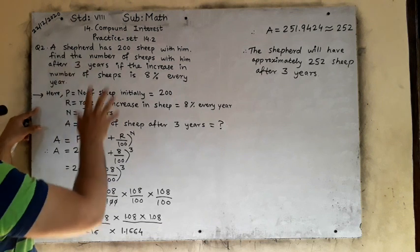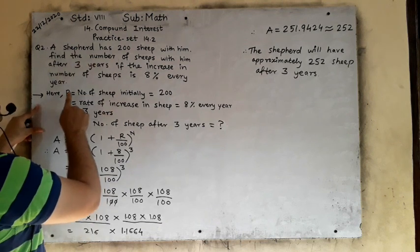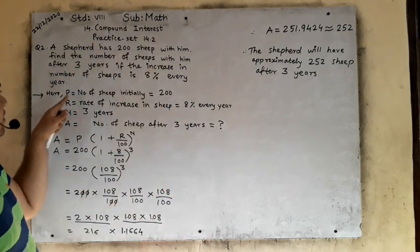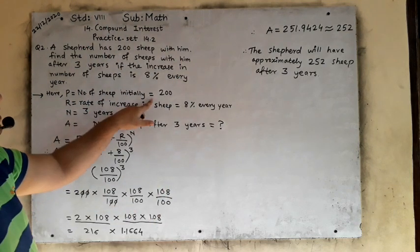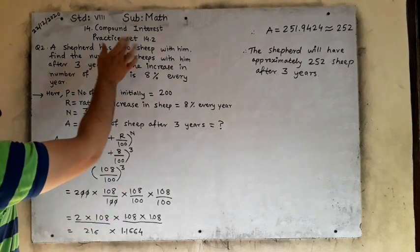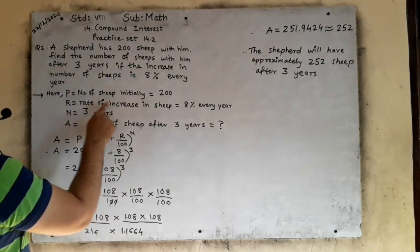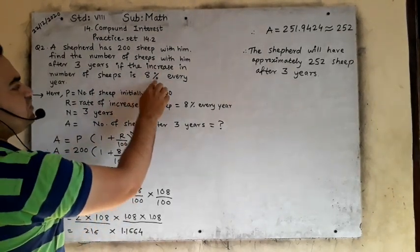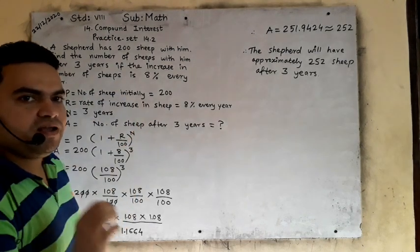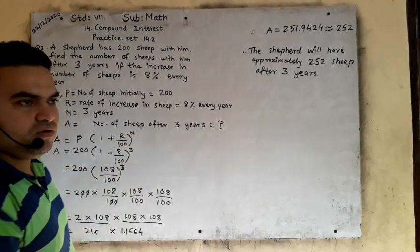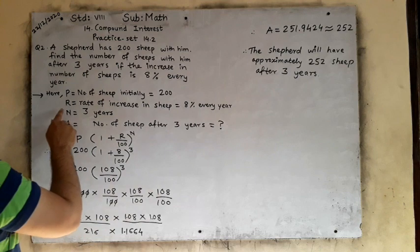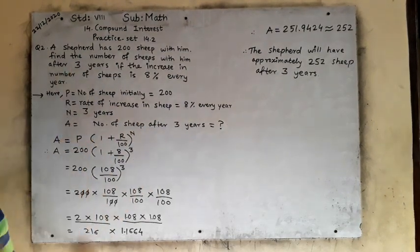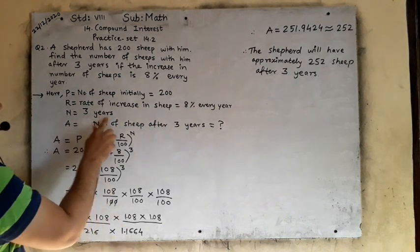Now, what things are given in this question? P, principle — means initially the shepherd has 200 sheep. Number of sheep initially is equal to 200. That is 200 is your principal. Rate of increase in sheep is equal to 8% every year. Whenever the number comes with percentage, that is your rate — percent per annum. So here the rate will be 8%. After 3 years means the duration, time, period is given — that is 3 years.